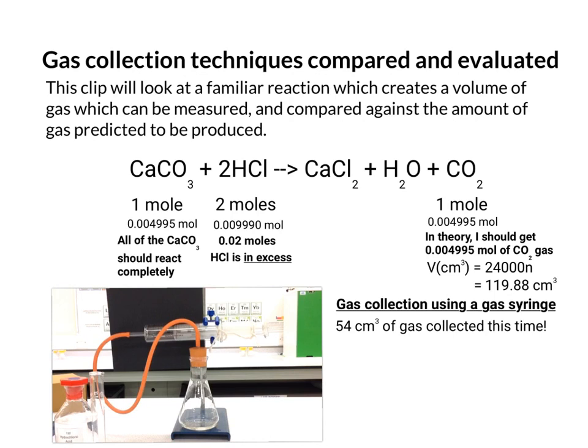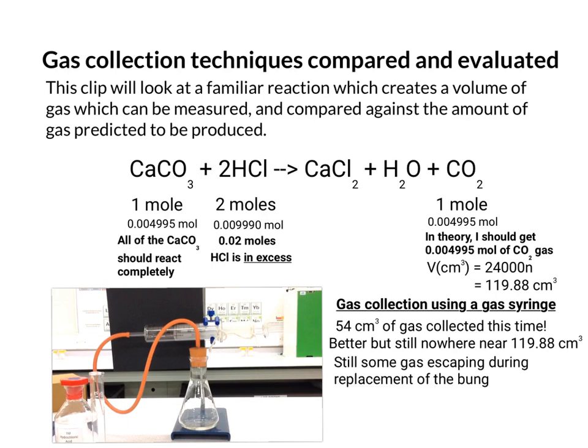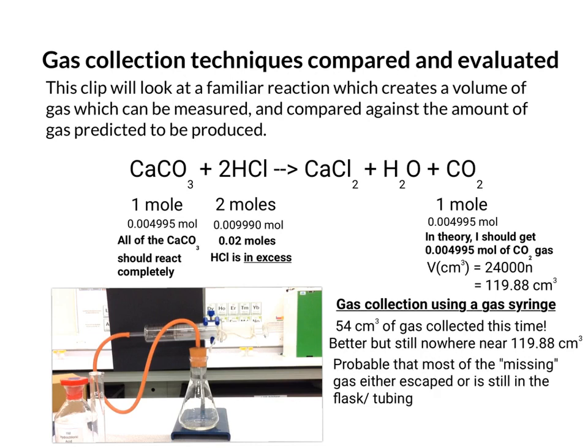So this time we've got 54 centimeters cubed of gas which is an improvement on 48 centimeters cubed which is what I had before but still nowhere near the amount we expected. So there's still some gas escaping during replacement of the bung. I deliberately didn't rinse my weighing boat so some solid may be left unreacted. That might not account for the significant lower volume that we're looking at. So even though there's a slight improvement here it's still possible or probably even that most of the missing gas is either escaped into the atmosphere or is still in the flask and tubing hasn't been picked up by the gas syringe yet.